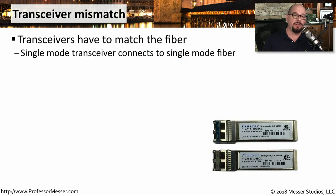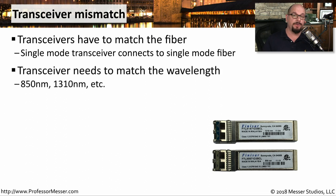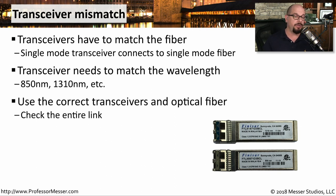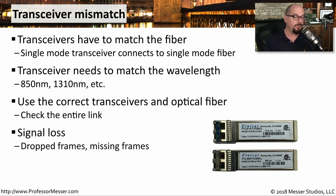If you're using transceivers in your network switches, you may want to check and make sure that those transceivers are matching the fiber or the connection that you're plugging into them. For example, if this is a fiber transceiver, then the transceiver needs to match the wavelength of the fiber. So if you have 850 nanometer fiber, you need an 850 nanometer transceiver. You also want to check across the entire link that you're using the correct transceivers and the correct optic fiber. If you don't use the correct fiber or the correct transceivers, you'll see signal loss, dropped frames, missing frames, or other physical layer problems.